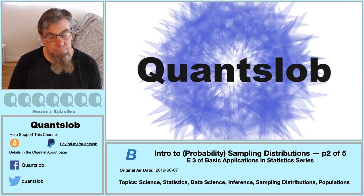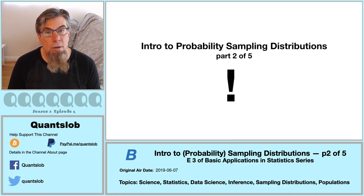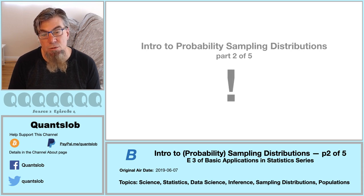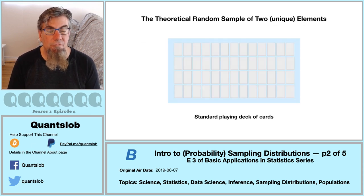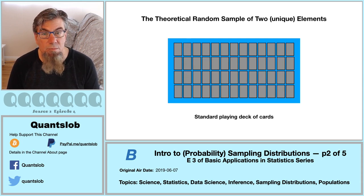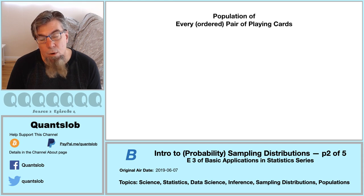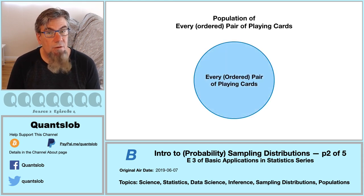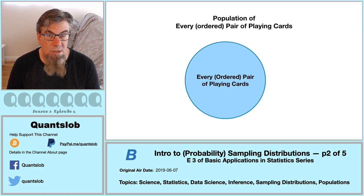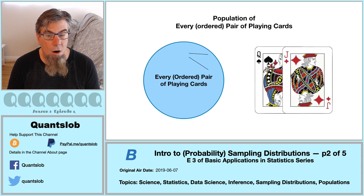Greetings and welcome to another installment of QuantSlob. This is third in our basic application series — part two in our mini-series on probability sampling distributions. We're going to pick up with our trusty deck of 52 cards. Let's imagine a theoretical random sample of two cards from our standard deck, where the two cards must be unique — our theoretical random sample cannot contain the same card twice. We have an alternate but entirely equivalent way of imagining this: we simply imagine a population that contains every possible ordered pair of cards.